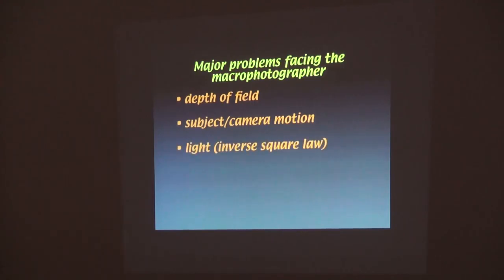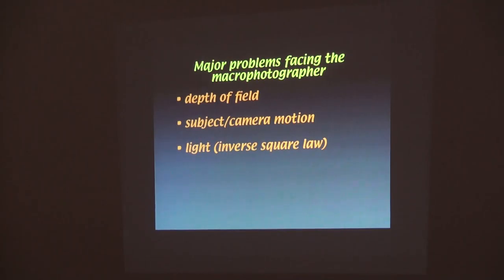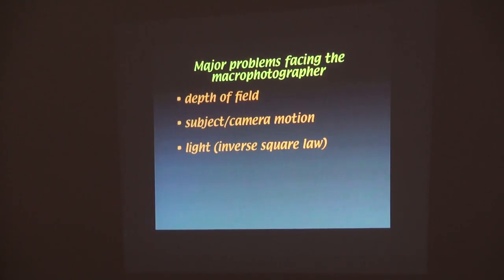Camera motion is a real issue. Light: as you get closer to the subject, you need more light, which means you have to use a slower shutter speed, which magnifies your vibration. The inverse square law: every time you halve the distance to a subject, you need four times as much light to do the same exposure. As you get closer to the subject, you need more light to expose it. If you're this far away you need x amount of light; if you're that far away you need four x. Which means you're going to need more shutter speed, you'll have to bump up that ISO — you have to do something to compensate for it.